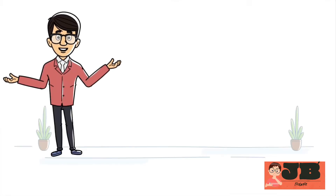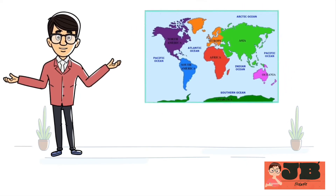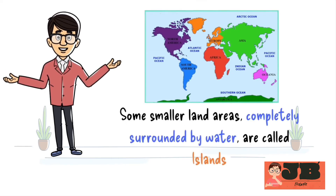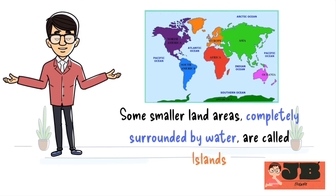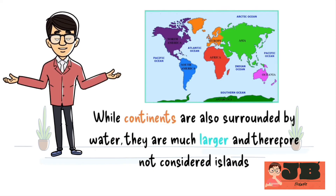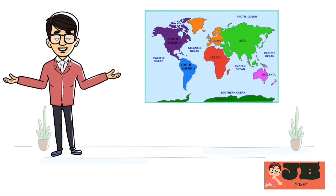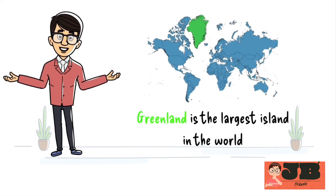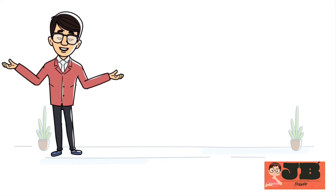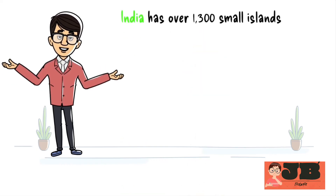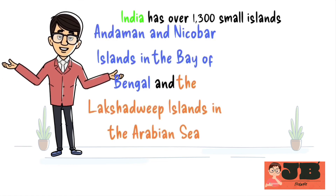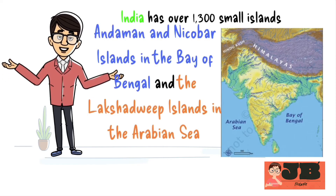Dear students, if you have looked closely at the maps, you might have noticed that not all land is part of a continent. Some smaller land areas completely surrounded by water are called islands. While continents are also surrounded by water, they are much larger and therefore not considered islands. There are hundreds of thousands of islands on Earth, and they vary greatly in size. Greenland is the largest island in the world — it's so big that you would need to combine the areas of the 10 largest states in India to match its size. India has over 1,300 small islands. The two main island groups are the Andaman and Nicobar Islands in the Bay of Bengal, and the Lakshadweep Islands in the Arabian Sea.